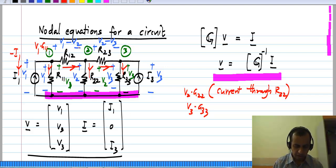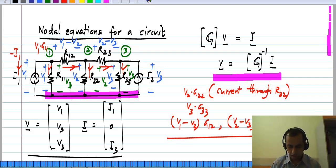And through these resistors R12 and R23 it can also be equally easily calculated as V1 minus V2 times G12 and V2 minus V3 times G23. So, this is how we can get a complete solution to the circuit.